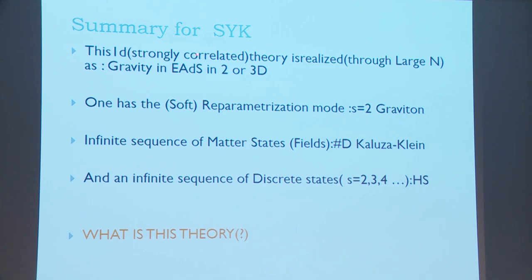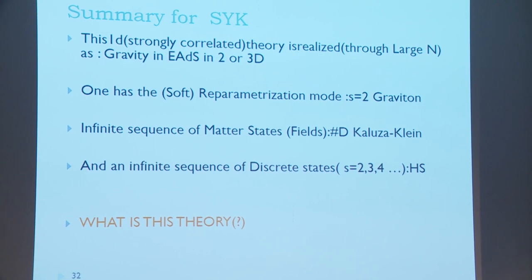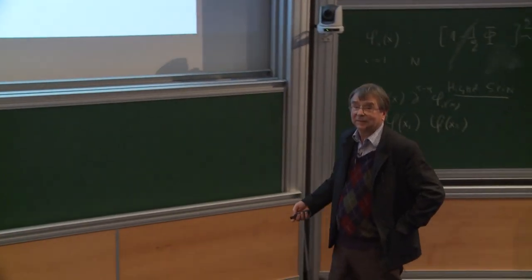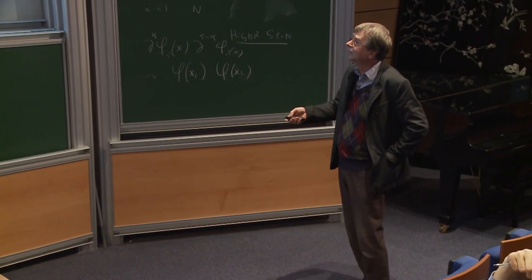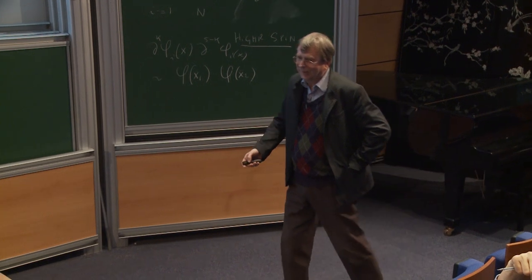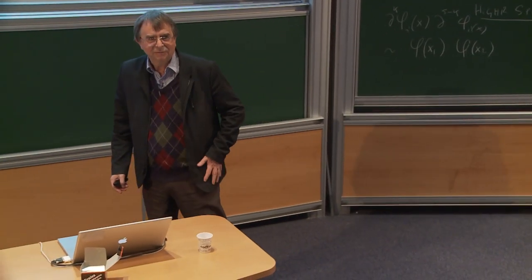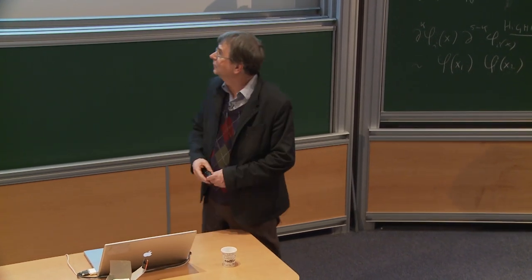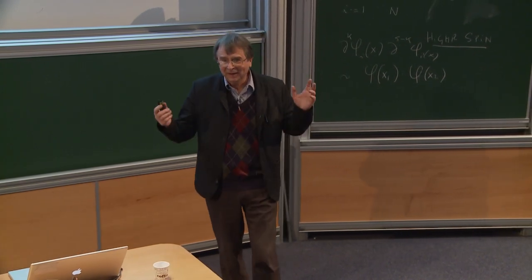In this SYK case, this is a prediction of what we accomplished with Kenta and Sumit Das: this simple one-dimensional strongly-correlated field theory equals some gravity in two or three dimensions. It has this soft mode called the graviton, an infinite sequence of matter fields understood via Kaluza-Klein, and also an infinite sequence of discrete states. All three together constitute what we believe is the complete spectrum of this theory. The dual is not known for this 1D case — for the higher-dimensional case the dual is known: higher-spin theory. In this case finding the dual remains a challenge.